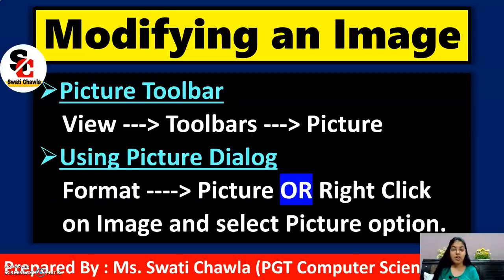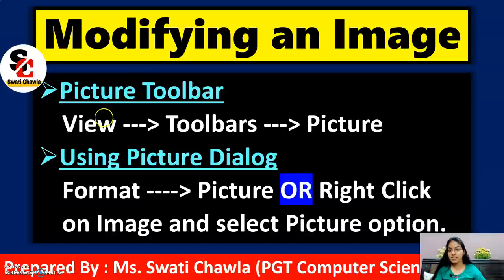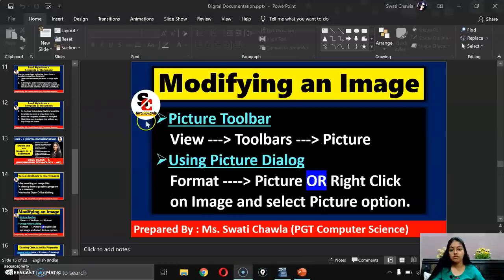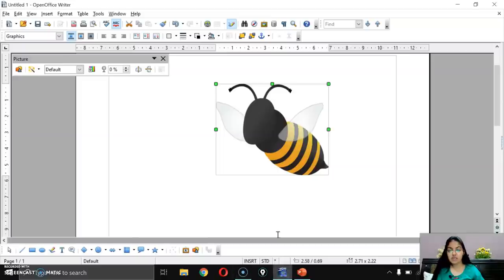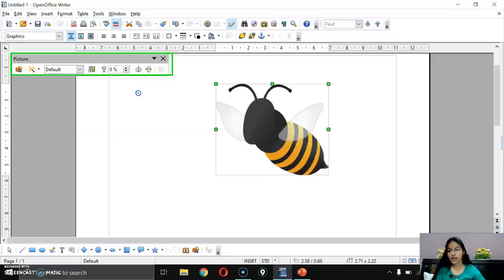Next topic: how to modify an image. We have two methods — first, using the Picture Toolbar, and second, using the Picture Dialog Box. As soon as we insert an image, the Picture Toolbar appears automatically. This is your Picture Toolbar.